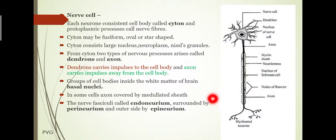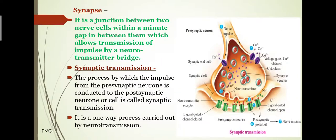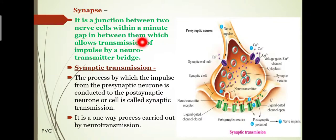The nerve fiber is surrounded by perineurium and the outer layer is known as the epineurium. A synapse is a junction between two nerve cells with a minute gap in between them, which allows the transmission of impulse by a neurotransmitter bridge.